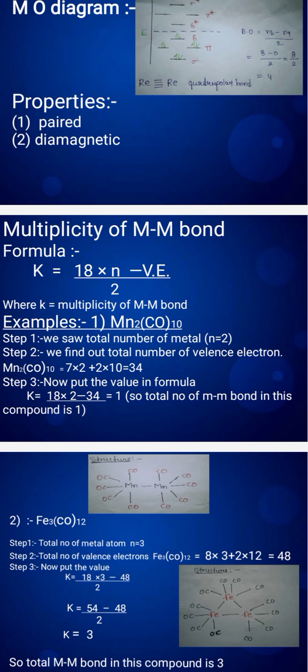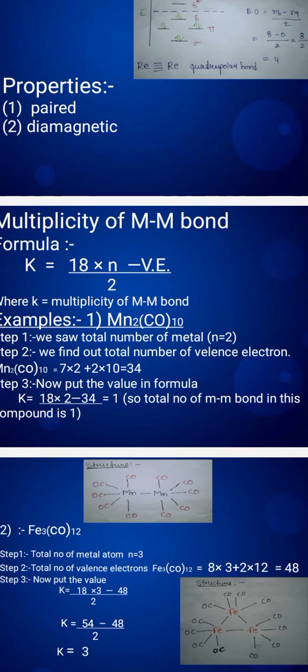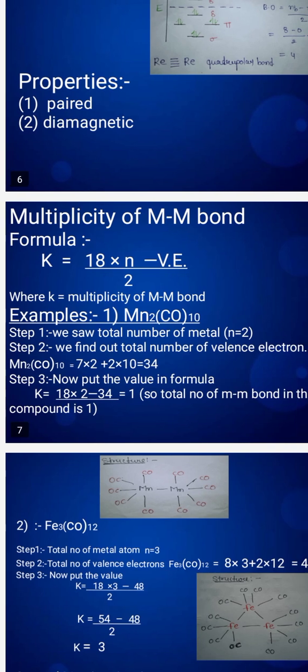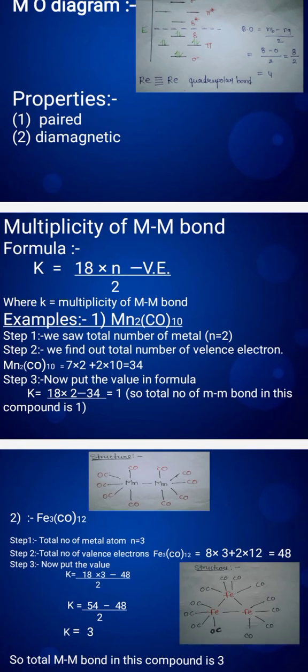The example is Mn2(CO)10. We solve in three steps. Step 1: total number of metal atoms is 2. Step 2: we find the total number of valence electrons. Using the 18-electron rule, Mn gives 7 electrons, so 7 times 2 equals 14. CO gives 2 electrons, so 2 times 10 equals 20, giving us total 34 valence electrons. Step 3: put the value in the formula. K = (18×2 - 34)/2 = (36 - 34)/2 = 2/2 = 1. So the total number of metal-metal bonds in this compound is 1.